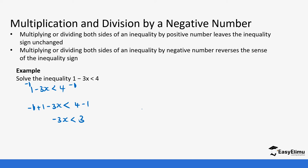Unlike in the previous lesson, we are going to divide this side by negative 3 and divide by negative 3. As soon as we do that, this gives us x. We have to change the sign. Remember, when you multiply or divide by a negative number, you change the sign directly, which gives us x is greater than negative 1.